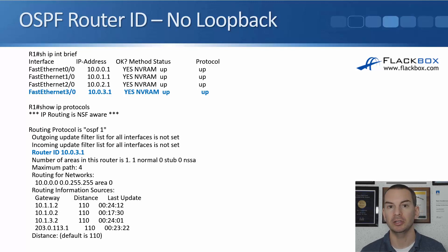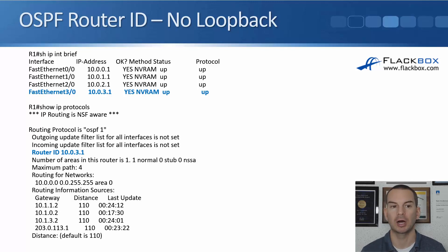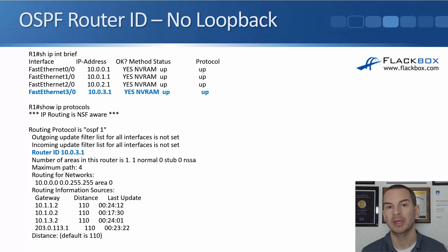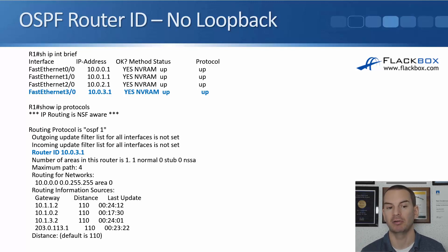If you haven't configured a loopback address on your router, you can see an example here on R1. Doing a show IP interface brief, there are no loopbacks configured. The highest IP address is 10.0.3.1, which is on interface FastEthernet 3.0, so that will be selected as the router ID. We can verify that by using the show IP protocols command, and we can see that yes, the router ID is 10.0.3.1.